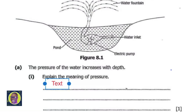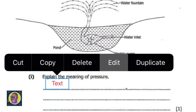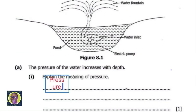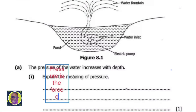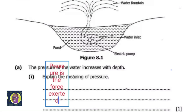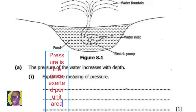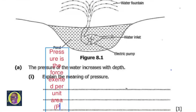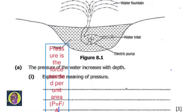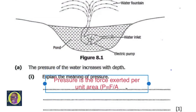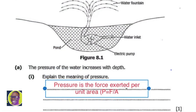Pressure is the force exerted per unit area, given by p = F/A. That is the answer for one mark.